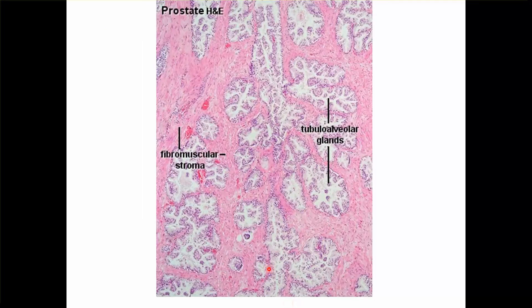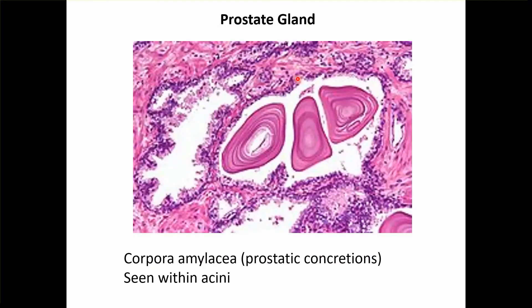You have the fibromuscular stroma separating the glands. These are the tubular alveolar glands which give alkaline secretion — a normal prostate showing a flowery kind of pattern. If you see concretions within, they are called corpora amylacia — prostatic concretions seen within the acini.